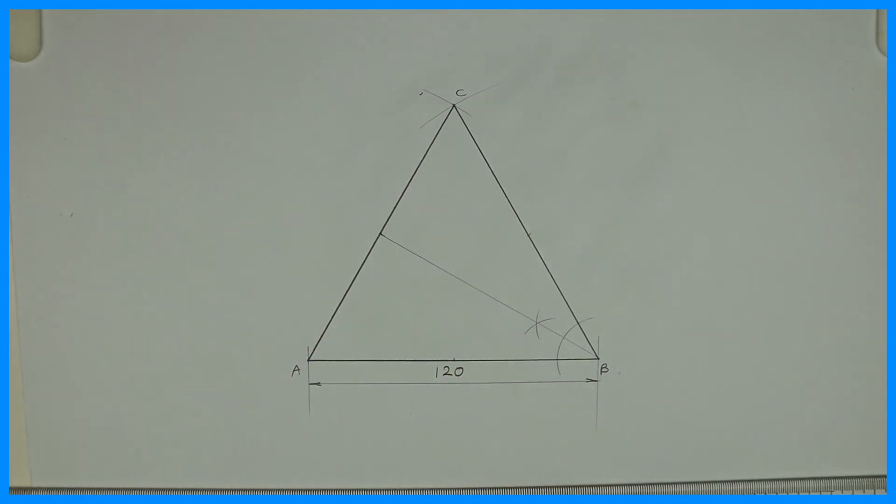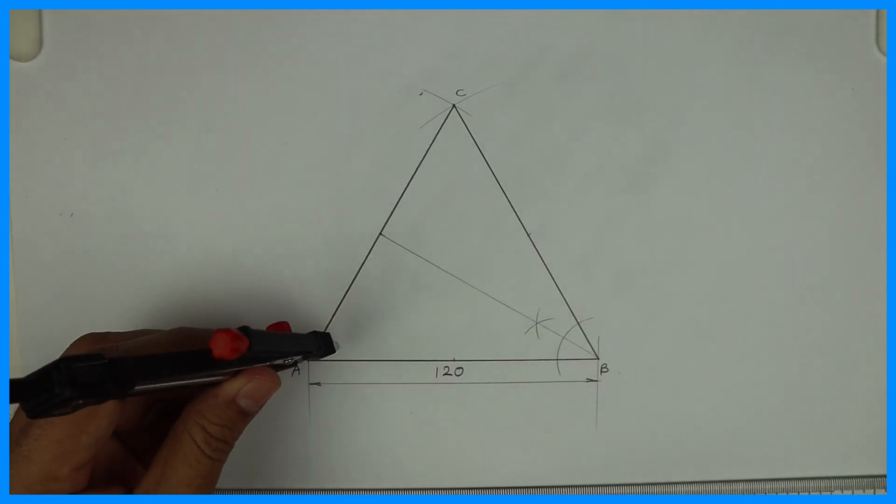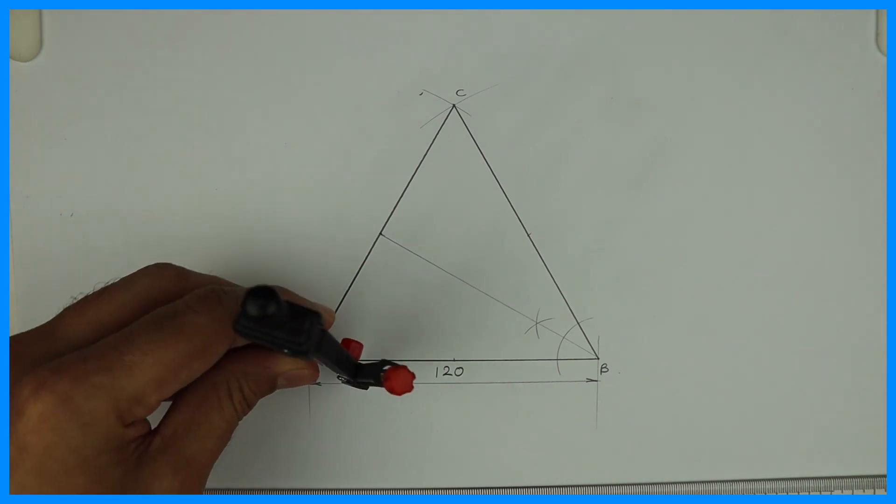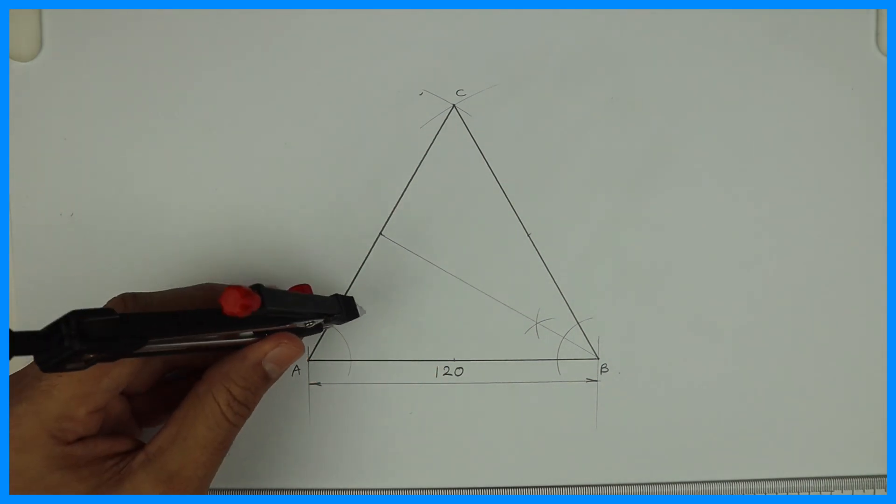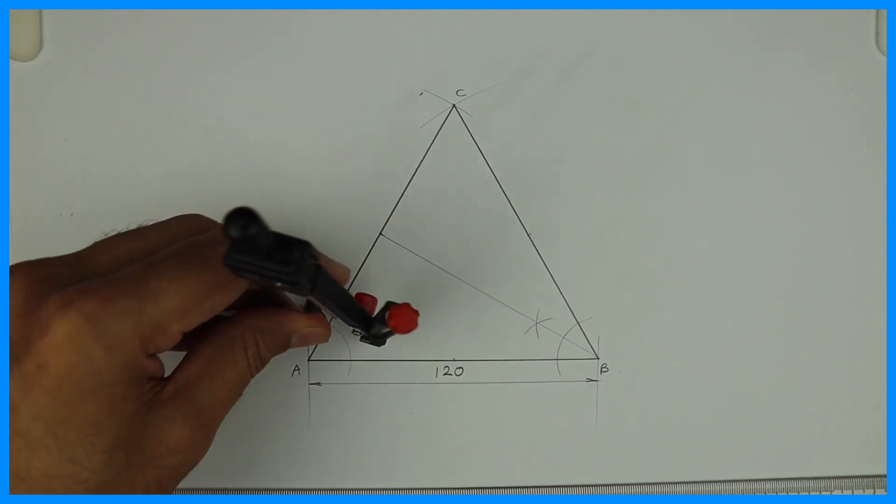Same way you bisect angle A also, CAB. And draw line, draw bisector.